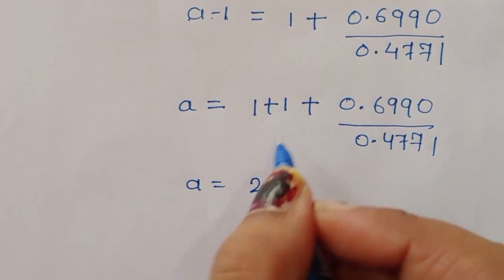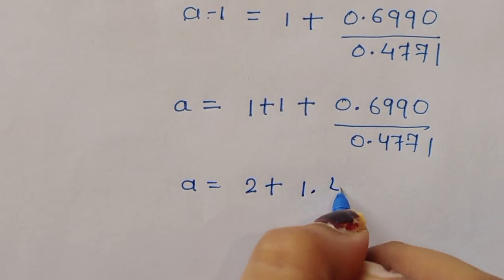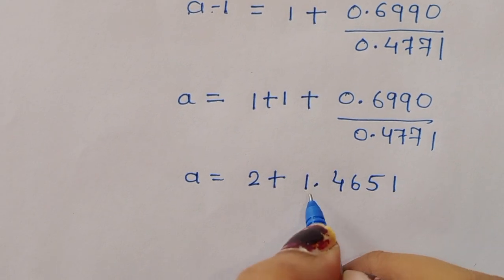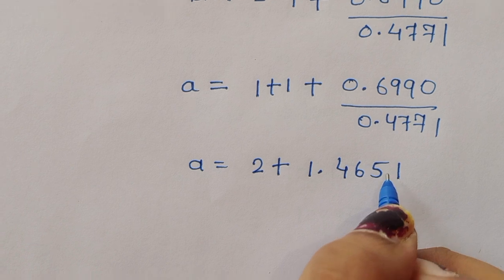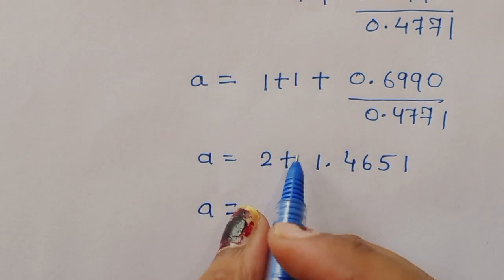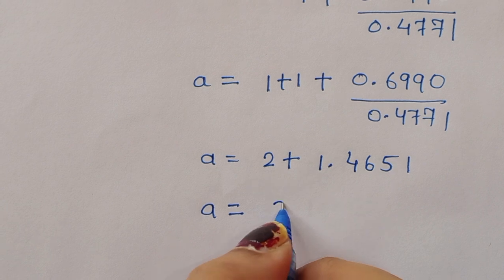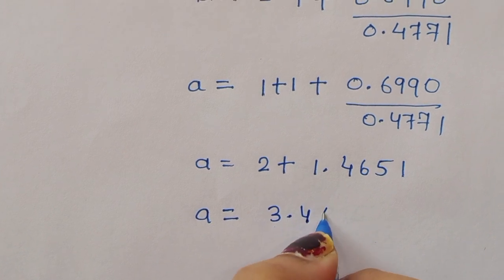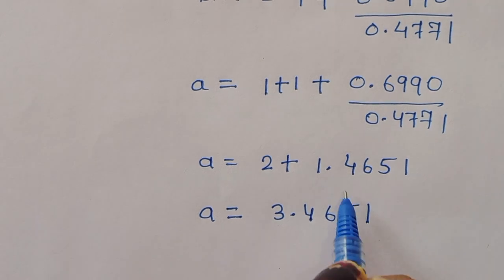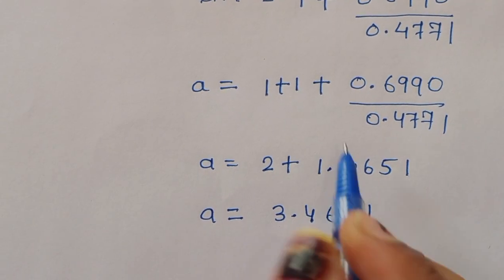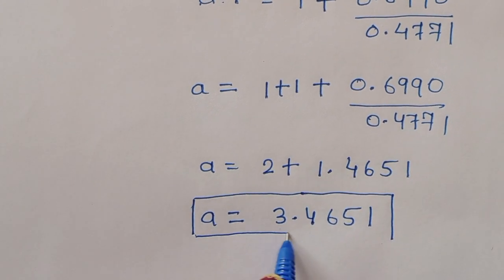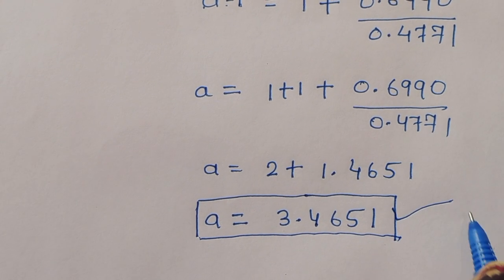When we add these terms, a is equal to 3.4651. This is the value of a and this is the solution. Thank you.